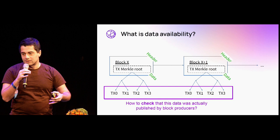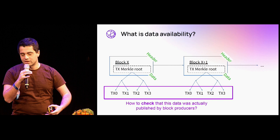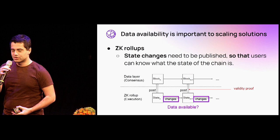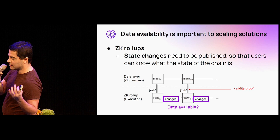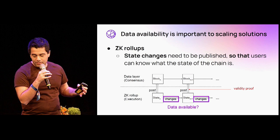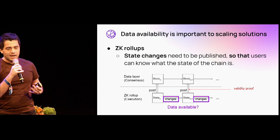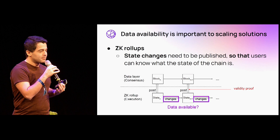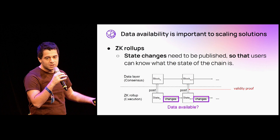This can cause various problems. For roll-up chains specifically — for ZK roll-ups or validity roll-ups — data availability is important because if the sequencer doesn't publish the state changes or the transactions, then users won't know what their balances are or what the state of the chain is. That effectively amounts to an attack where a sequencer can freeze people's funds and hold them hostage, or even demand payment through bribery attacks.